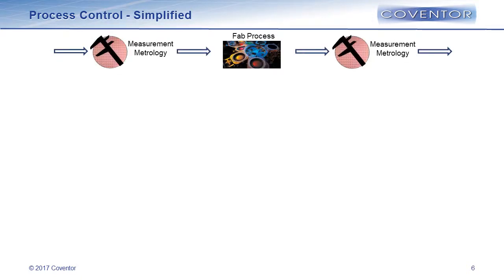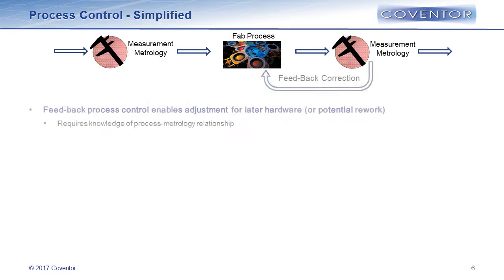Many people are using this for technology development, flow exploration, and prototyping. But now I'm going to change gears and move into process control using this type of technology. Taking a very simplified view: wafers move through the fab, hit a measurement or metrology operation, get another process performed, and then an outgoing metrology operation. Often you can take data from measurement and feed that back to the process operation — this is called feedback process control, which enables process adjustment for later hardware. This really only requires knowledge of what to tune on a process to impact metrology — simple process-metrology knowledge.